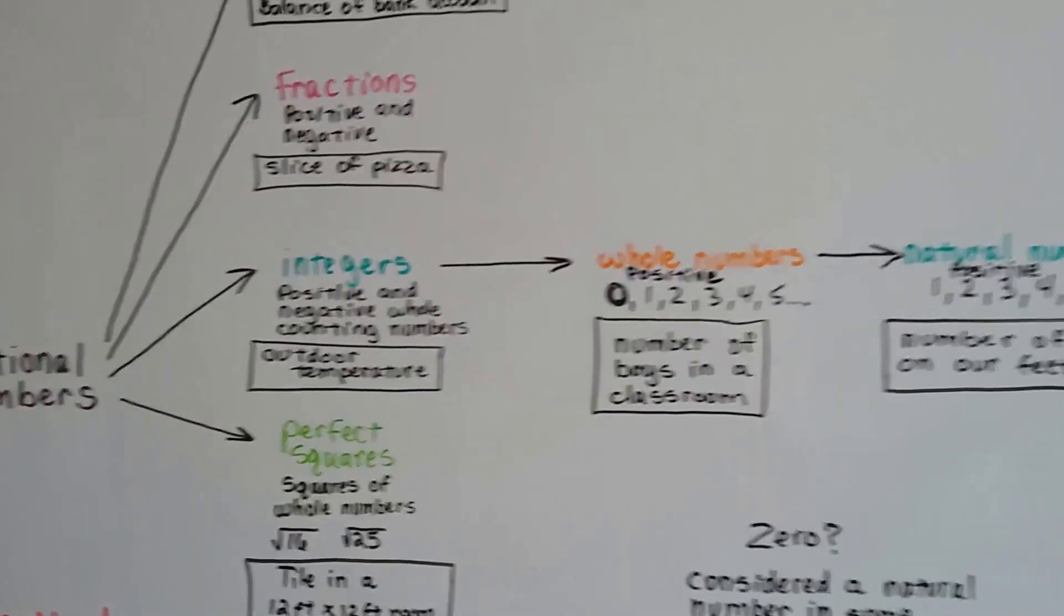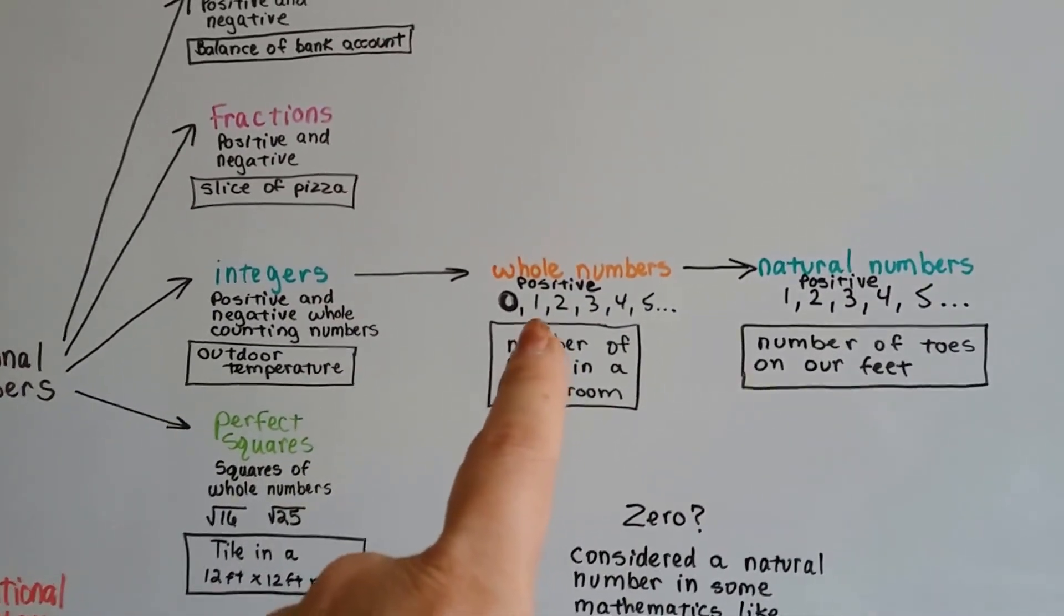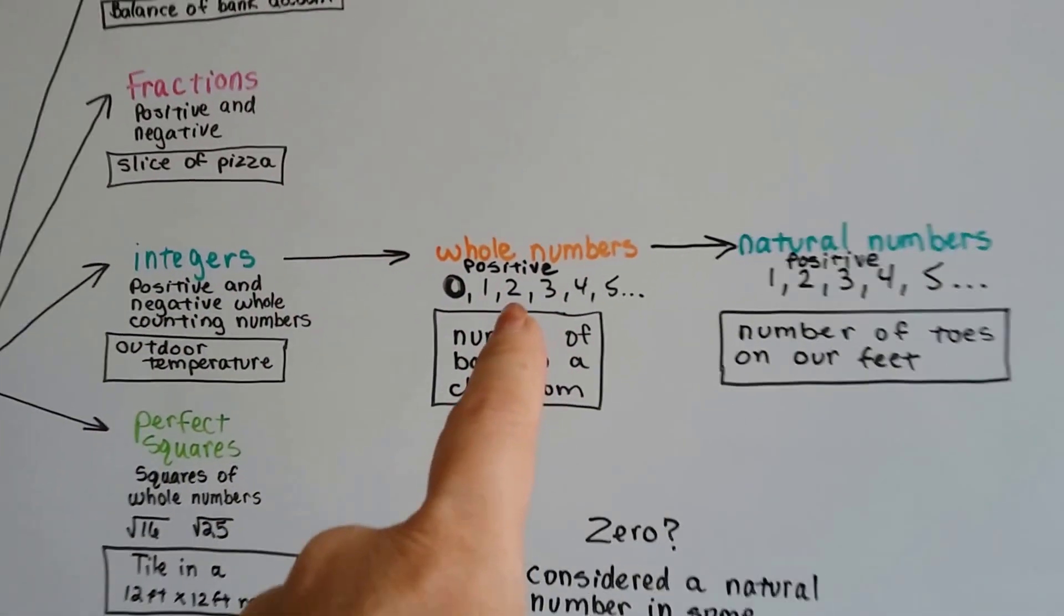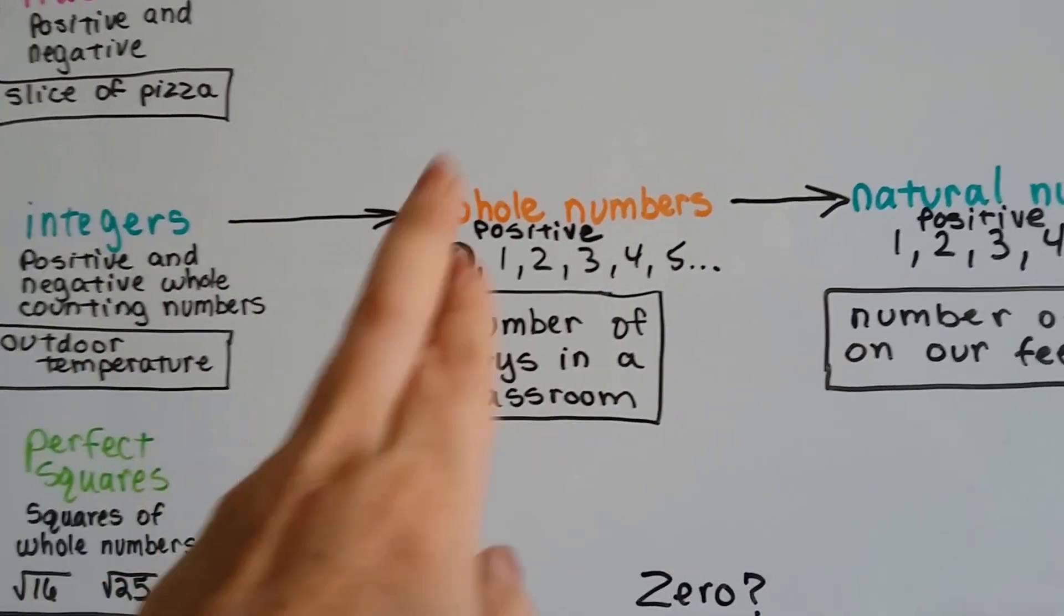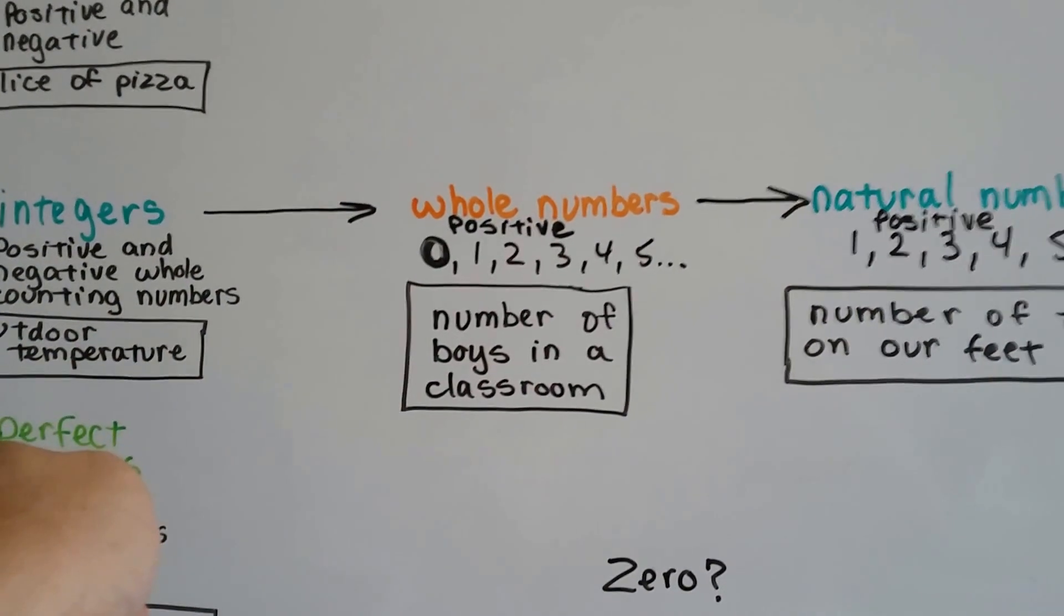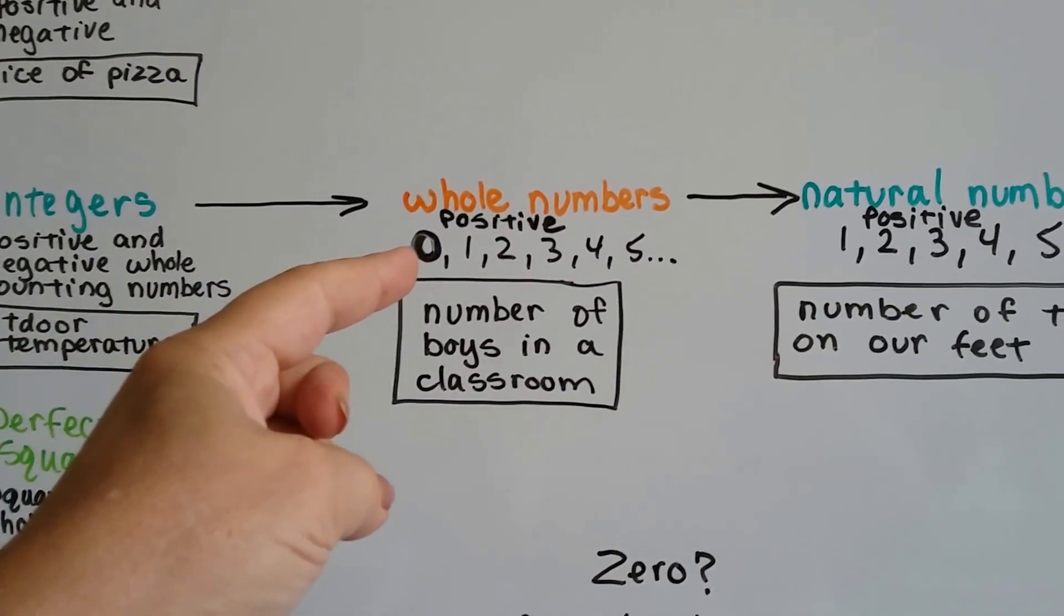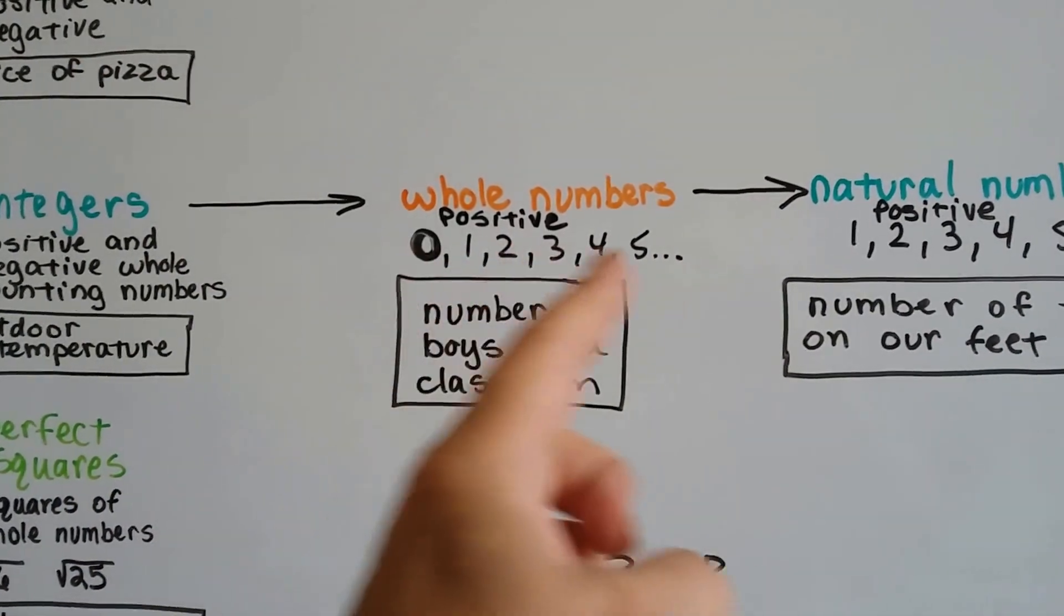Now for integers, it breaks off into whole numbers. So whole numbers are integers and they're positive. The negatives stay here. Now these are just positive. And the whole numbers are like how many boys are in a classroom? Well, there's 11. It includes zero and it's all the numbers going up to infinity from there.